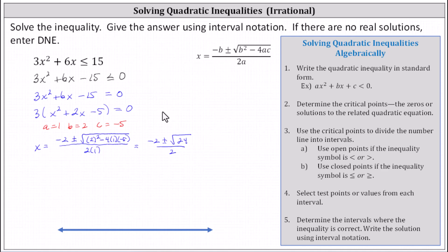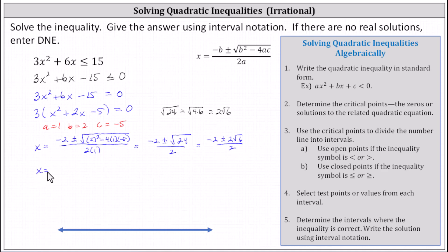The square root of 24 is equal to the square root of four times six. The square root of four is two, giving us two square root six. So now we have x equals negative two plus or minus two square root six, all divided by two. Breaking this up, we have negative two divided by two, plus or minus two square root six divided by two, which equals negative one plus or minus square root six.